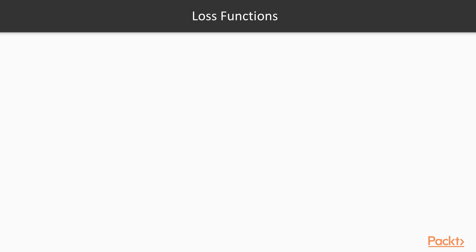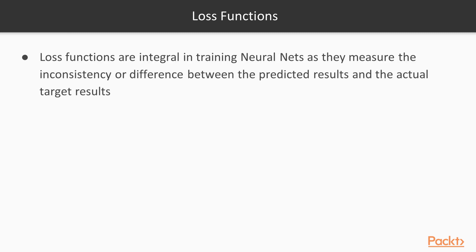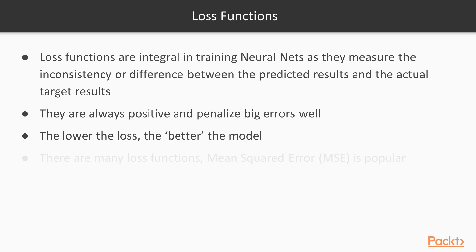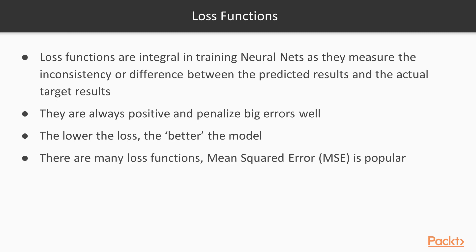Loss functions are integral in training neural networks and CNNs, as they measure the inconsistency or difference between the predicted results and the actual targets. They're always positive and penalize big errors. The lower the loss, the better the model. Common loss functions include mean squared error (MSE), mean absolute error (MAE), mean bias error, and hinge loss. MSE is a very common one we use.